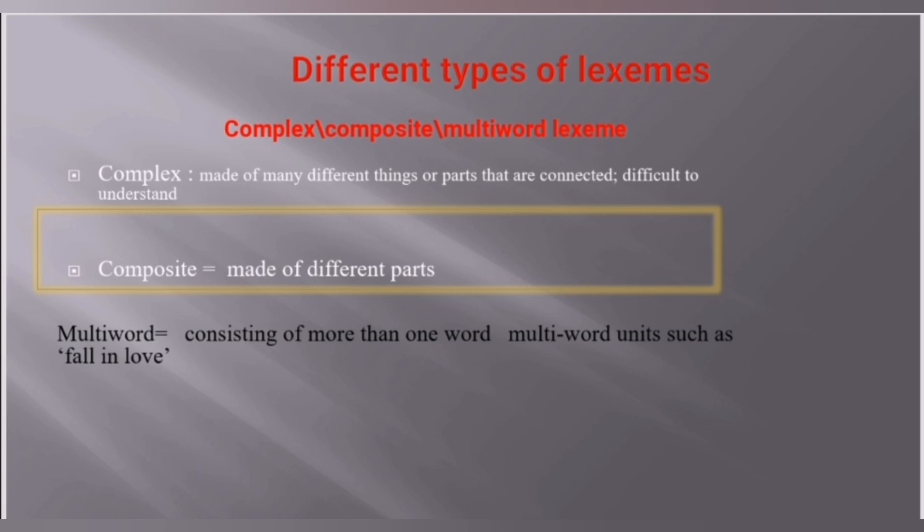Next, we have complex, composite, and multi-word lexemes. 'Complex' means made of many different things or parts that are connected — difficult to understand. 'Composite' means made of different parts. A composite lexeme is a single lexeme but it contains multiple words, so it is known as the complex lexeme.